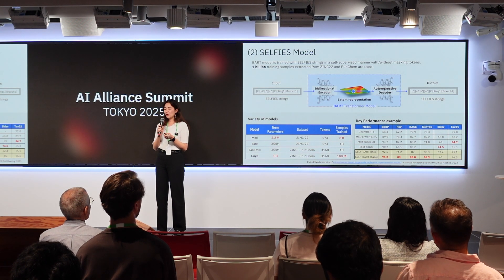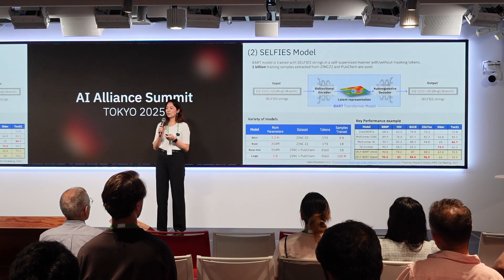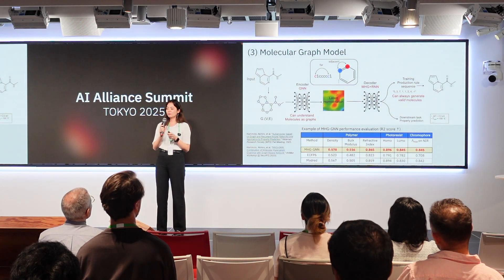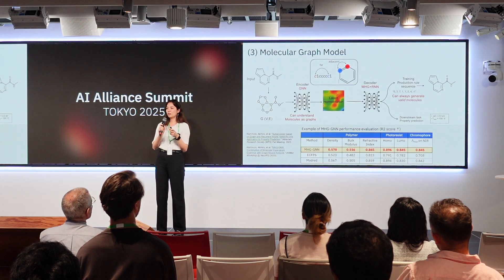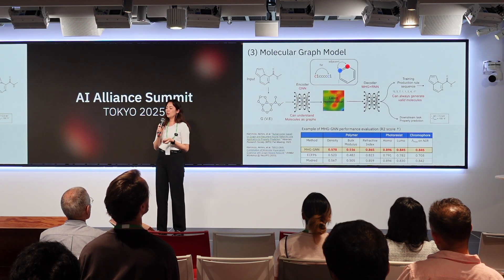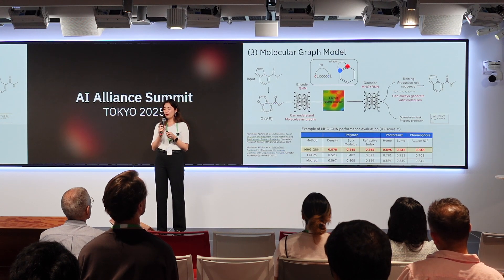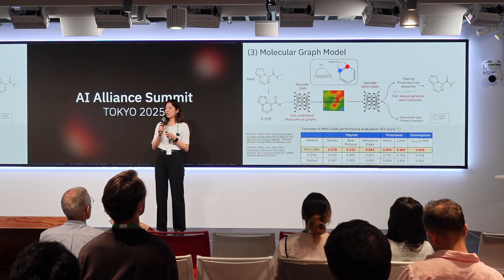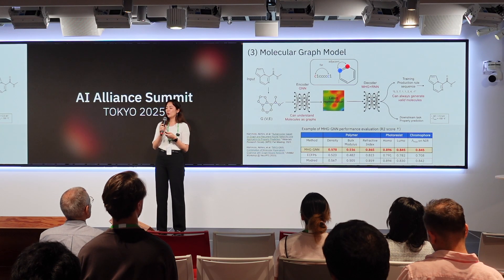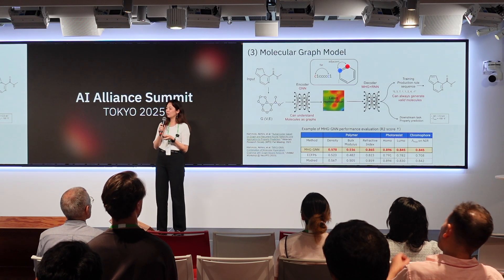So far I've talked about two models using the string or text representation of a molecule. But in the molecule itself, atoms can lie very close to each other — like adjacent in a benzene ring — while in the string representation they could lie very far apart. To capture the spatial distance of atoms within a molecule, we also have the molecular graph model.